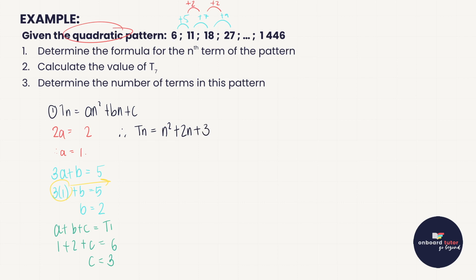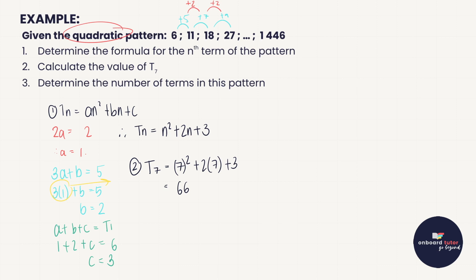Now they ask us to determine the number of terms in the pattern, given that the last term is 1,446. Using our general term, we need to find n when n² + 2n + 3 = 1,446. This becomes a quadratic equation to solve.